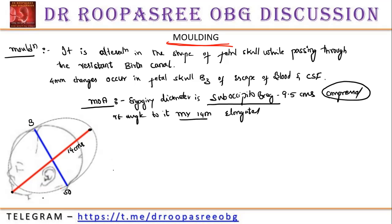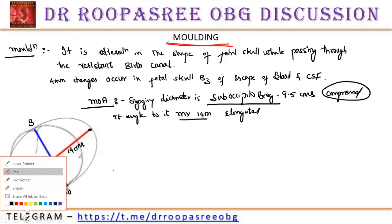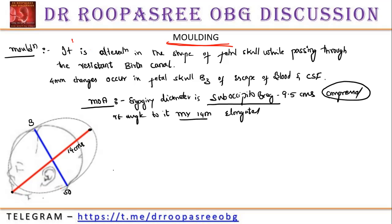The questions that can be asked here include: define molding — alteration in the shape of the fetal skull. How much diameter is involved? Only 4 mm. Why? Because of the escape of blood and cerebrospinal fluid. Which diameter is compressed? Suboccipitobregmatic. This has appeared in the last three question papers — suboccipitobregmatic is compressed and mento-vertical is elongated.